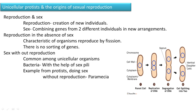In fission, the genetic material is replicated, then the cell membrane furrows and the cell divides into two individual cells. Here reproduction is occurring but there is no mixing up of genes between two individuals, so sex is absent. This type of process — reproduction in the absence of sex — exists in some organisms.